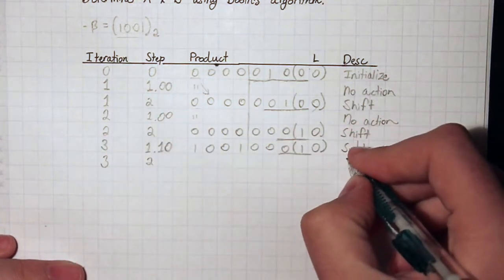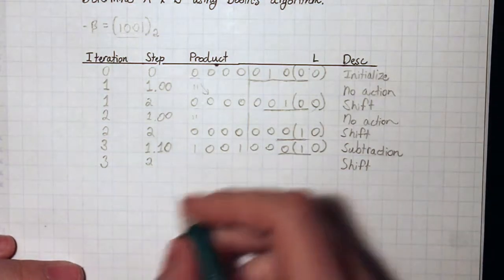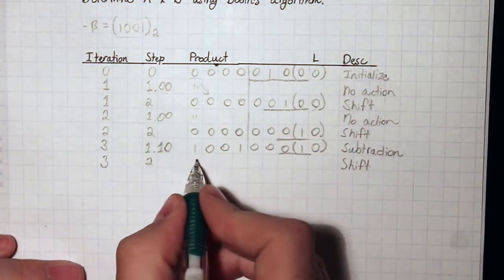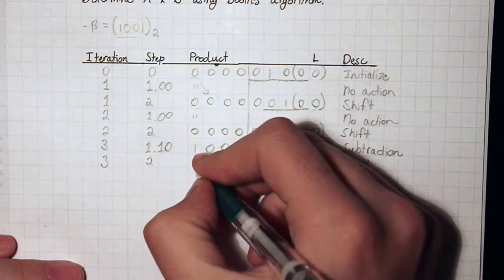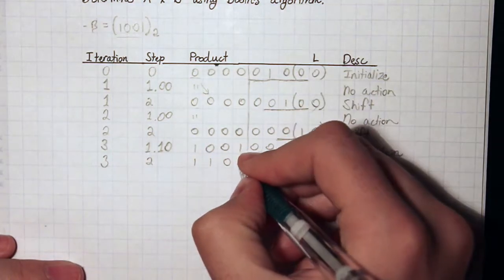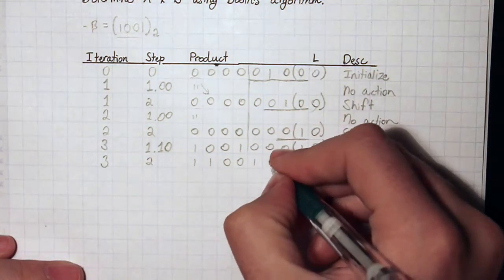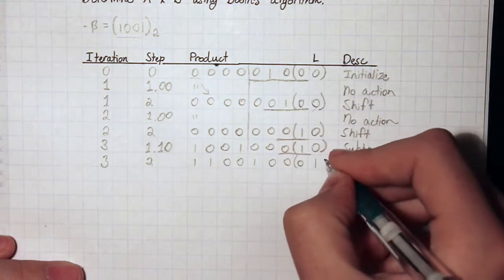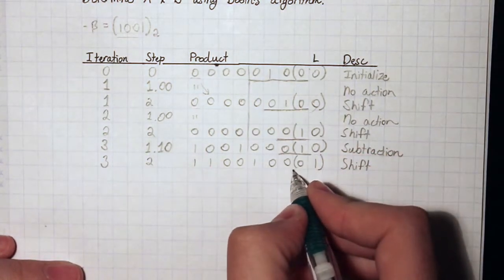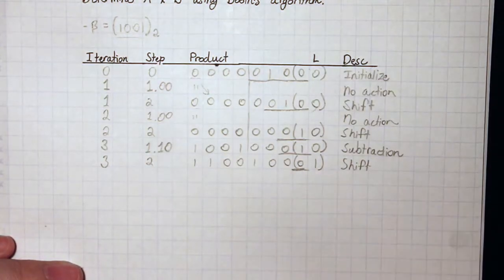For iteration 3, step 2, we shift. Now we have a 1 in our product register's MSB, so we shift in a 1 instead of a 0 to preserve the sign. We re-underline the multiplier — now we're down to our last bit of the multiplier.